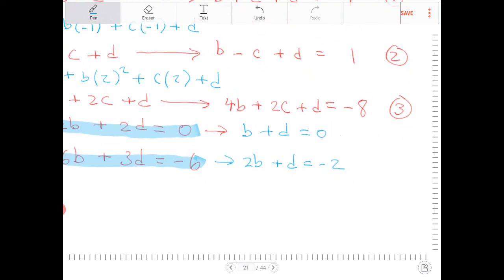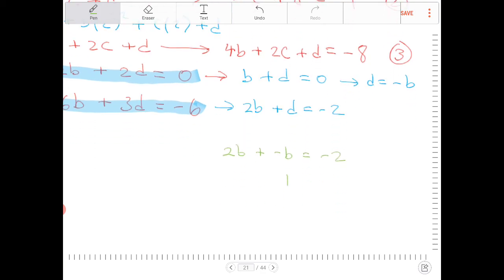If I solve b in terms of d, or d in terms of b, so d equals negative b, substitute that into the second equation there. I will end up with 2b, plus replace d with negative b, equals negative 2. Add 2b and negative b together, I get b equals negative 2.